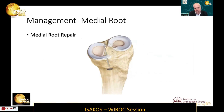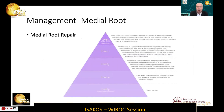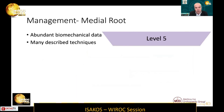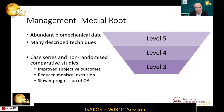The third treatment option is meniscal root repair — this is a typical trans-osseous root repair. In terms of evidence, there is abundant biomechanical data, but by far the most common published article is a description of technique. There are also a number of case series and non-randomised comparative studies, which in general have shown improved subjective outcomes, some reduction in meniscus extrusion, and slower progression towards osteoarthritis.